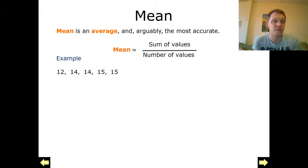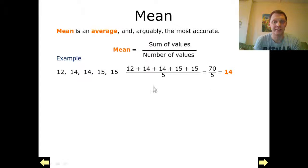So for example we've got 12, 14, 14, 15, 15. To find the mean of this we're going to add them together, which we can see on the top row here, and then we're going to divide it by 5 because we've got 1, 2, 3, 4, 5 numbers. So we get 70 divided by 5 which gives us 14, and 14 is our mean average for this.